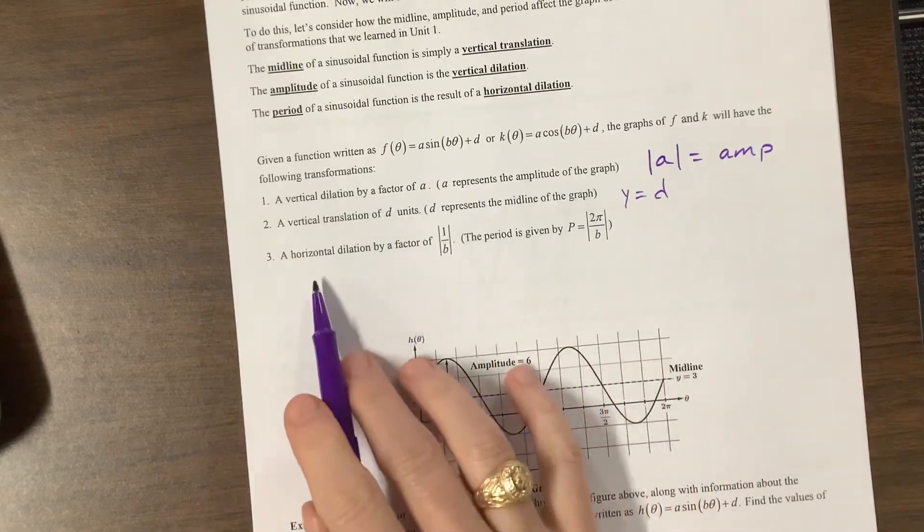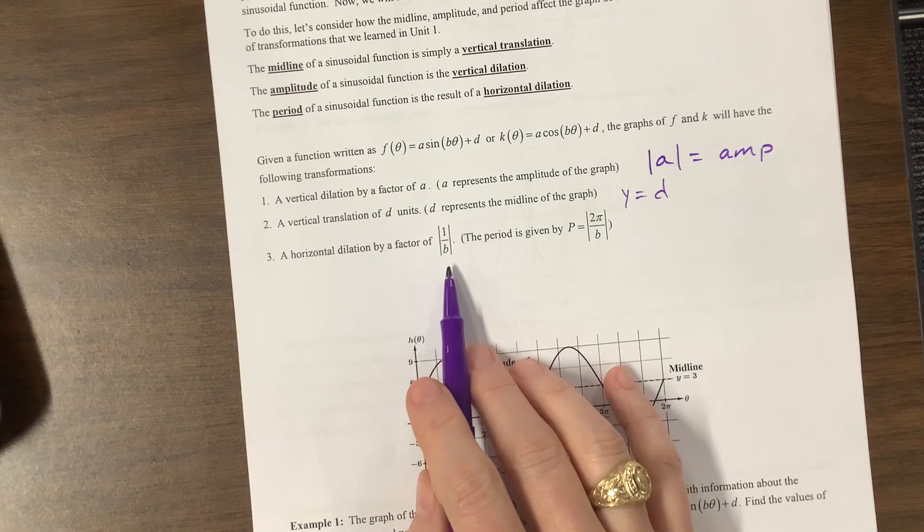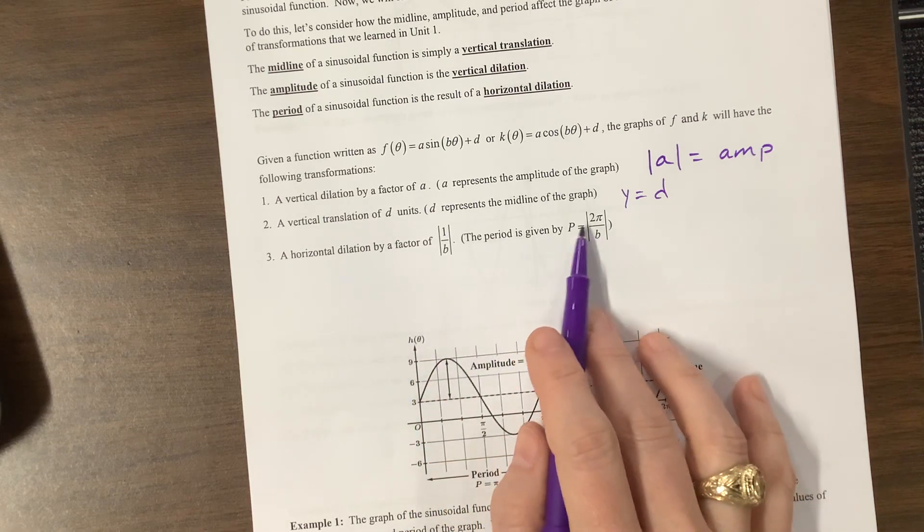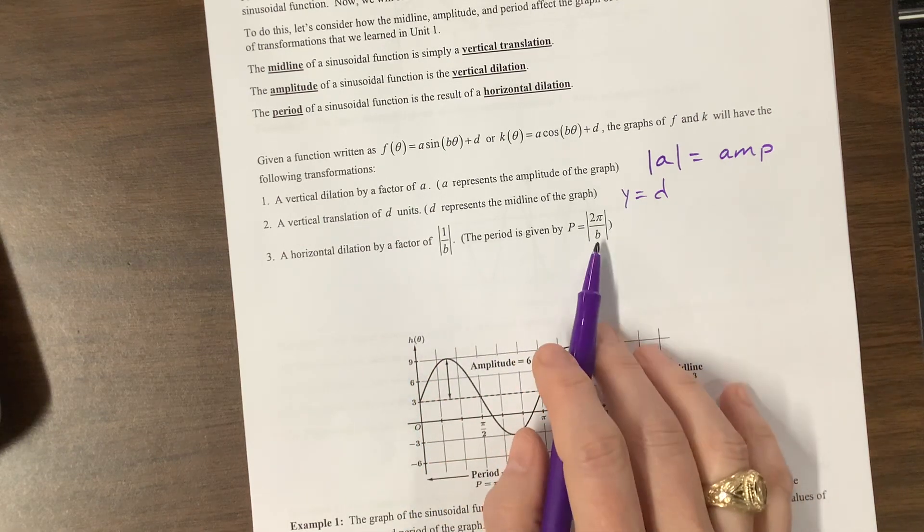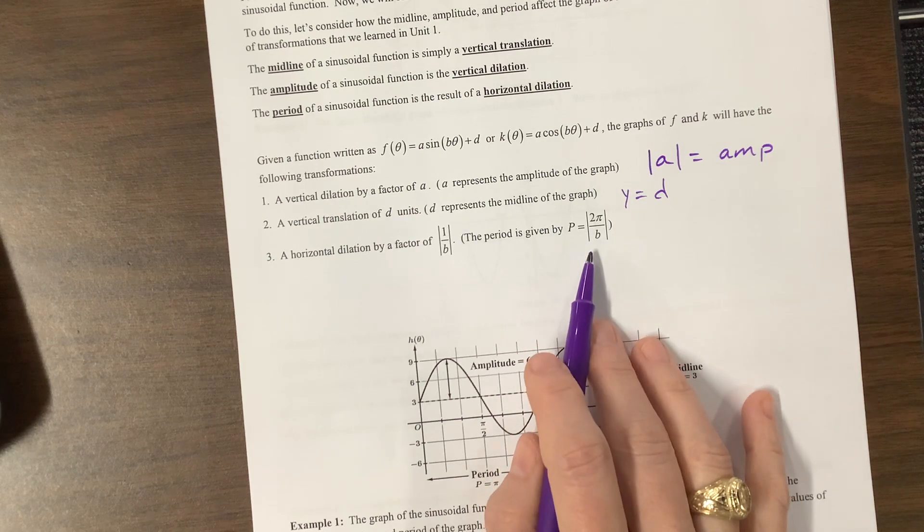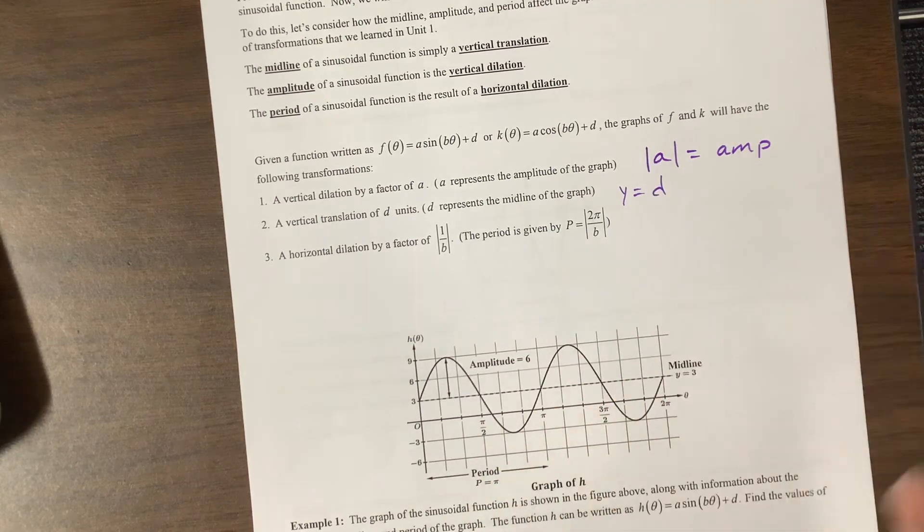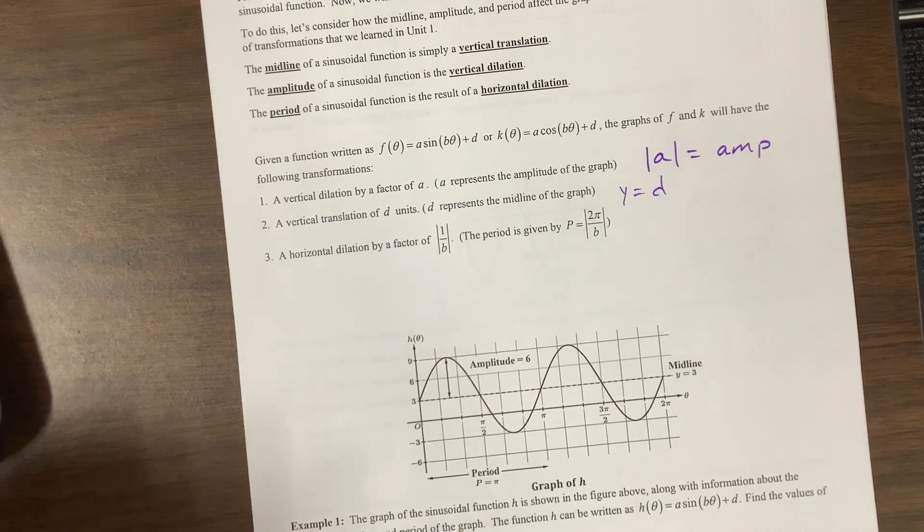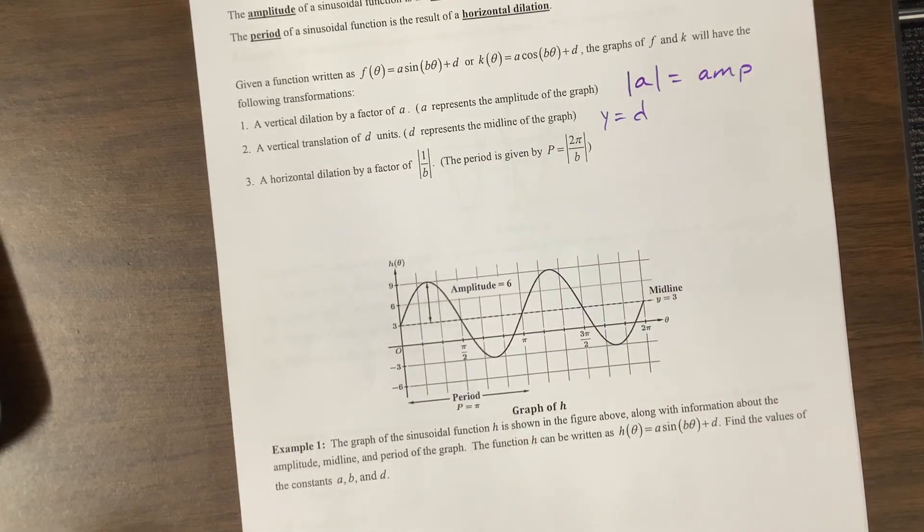A horizontal dilation by a factor of the absolute value of 1 over b, and so the period is 2π over b. It's kind of funny. I don't put my absolute values here very often. It's true, but I always put them here. So I guess we each have our own things we're habitually inclined to do.